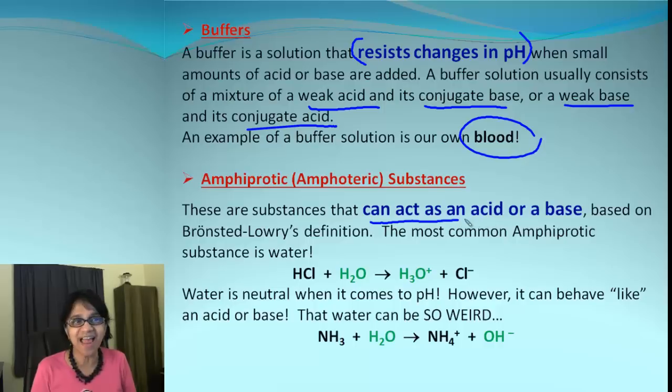Those are substances which can act as an acid or also as a base. It depends upon the circumstances, so they have kind of like dual nature, or they are like moody chemicals. One of the examples for amphoteric substance is water.